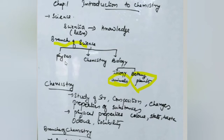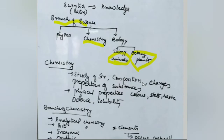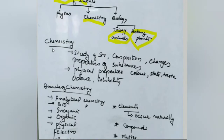Chemistry covers many chemical reactions and various processes that take place in our body and outside. Biology is again classified into two types: zoology, the study of animals, and botany, the study of plants.